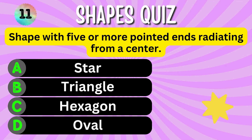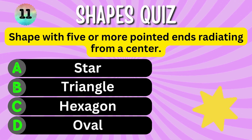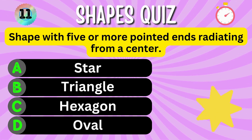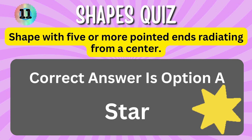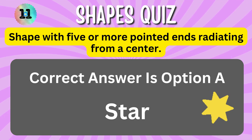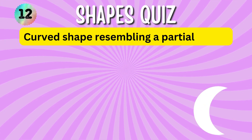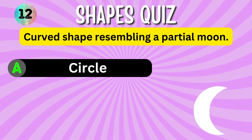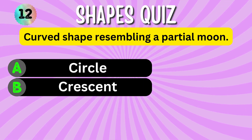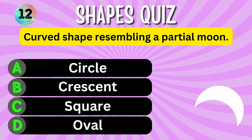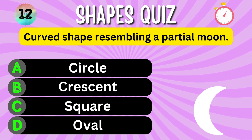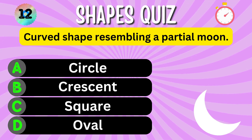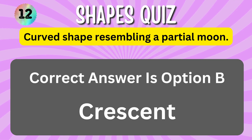The correct answer is Option A, Star. A curved shape resembling a partial moon. Option A. Option B. Option C. Option D. You have 5 seconds to choose the correct answer. Your time starts now. The correct answer is Option B, Crescent.